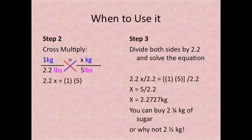So X is equal to 2.2727 kilograms. In this case you can buy 2 and a quarter kilograms of sugar or maybe buy 2 and a half kilograms of sugar or you can just buy 3 kilograms and you don't have to go back again and enjoy your vacation.